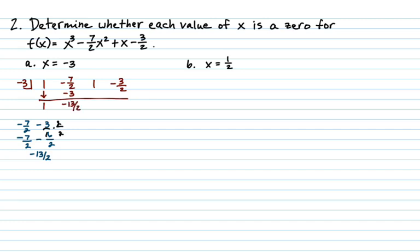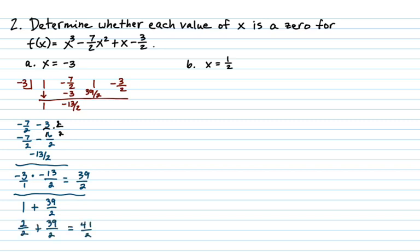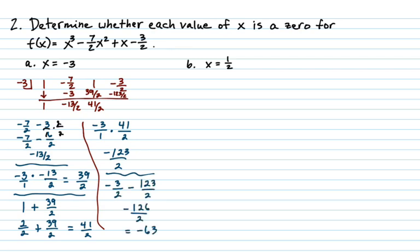So next we're going to multiply negative 3 times negative 13 halves. When we multiply, we multiply across numerator times numerator, denominator times denominator. So here we'll get 39 over 2. So 1 plus 39 over 2. Let's see, again, I need a common denominator of 2. Well, 1 is 2 over 2. And we get 41 halves. Well, by the way, at this point, you probably can see you're not going to get 0. But if you multiply across, you get negative 123 over 2. And we're definitely not going to get 0 there. So when we add here, you end up getting negative 63. So the answer is definitely no.